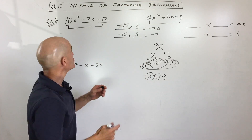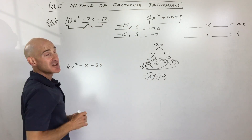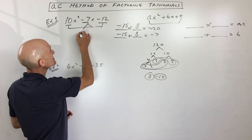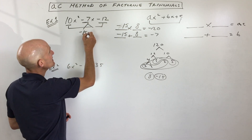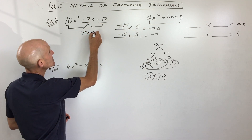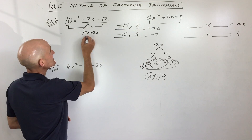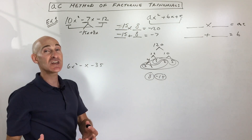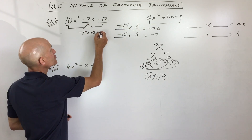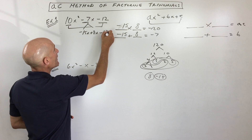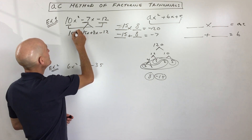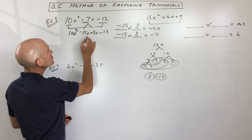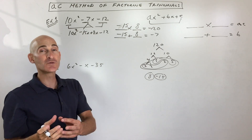So what do we do with those two numbers? We split this middle term. Instead of negative 7x, I'm going to write it as negative 15x plus a positive 8x. That still adds up to negative 7x, so I haven't changed the value of this middle term — I've just broken it up into two pieces. Now what we have is four terms.